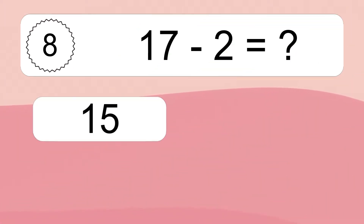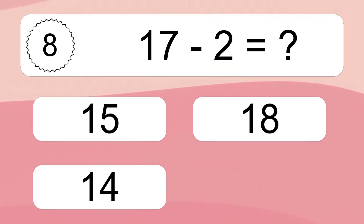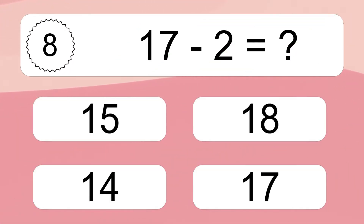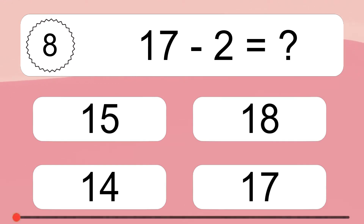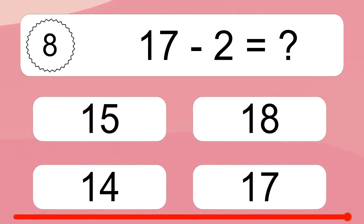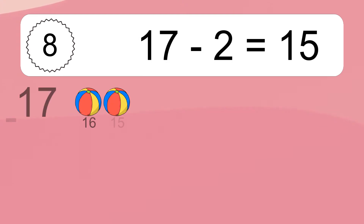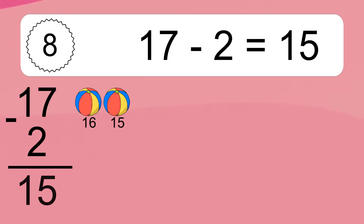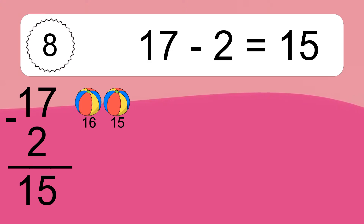17 minus 2 equals what? 17 minus 2 equals 15. Let's count it: 16, 15.